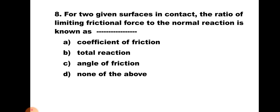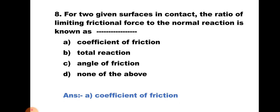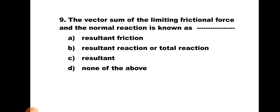Question number eight: For two given surfaces in contact, the ratio of limiting frictional force to the normal reaction is known as — a) Coefficient of friction, b) Total reaction, c) Angle of friction, and d) None of the above. The ratio of limiting frictional force to the normal reaction is known as coefficient of friction. Hence the correct answer is a) Coefficient of friction.